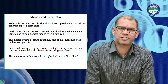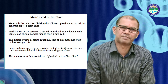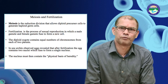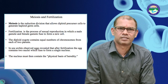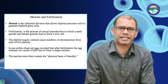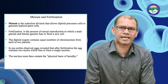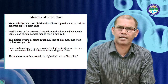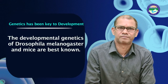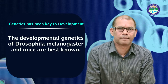Meiosis is the reduction division that allows diploid precursor cells to generate haploid germ cells. Fertilization is the process of sexual reproduction in which male gametes and female gametes fuse to form a new cell — the diploid zygote. The diploid zygote contains an equal number of chromosomes from each of the two parents. In sea urchin, it has been observed that after fertilization the egg contains two nuclei which fuse to form a single nucleus. The nucleus must then contain the physical basis of heredity. The developmental genetics of Drosophila melanogaster and mice are best known.